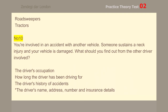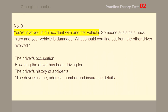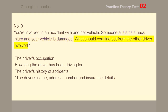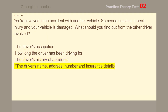Number 10. You're involved in an accident with another vehicle. Someone sustains a neck injury and your vehicle is damaged. What should you find out from the other driver involved? The driver's name, address, number and insurance details.